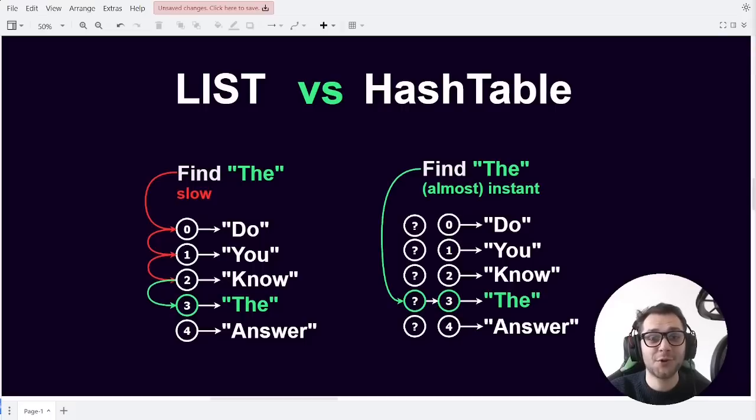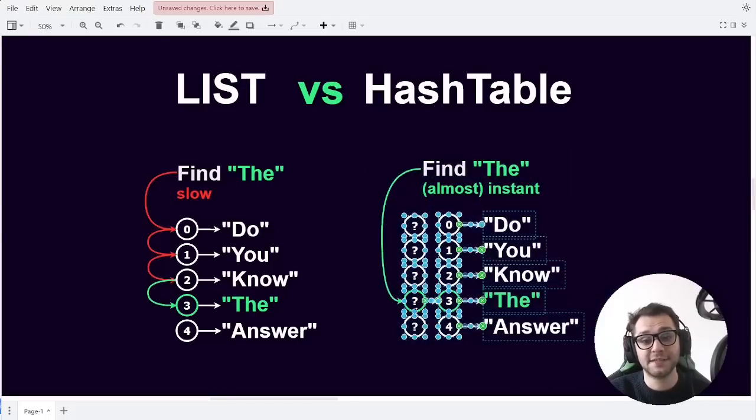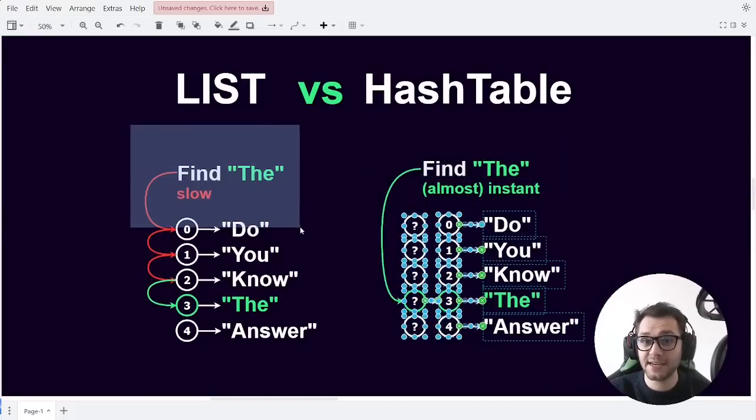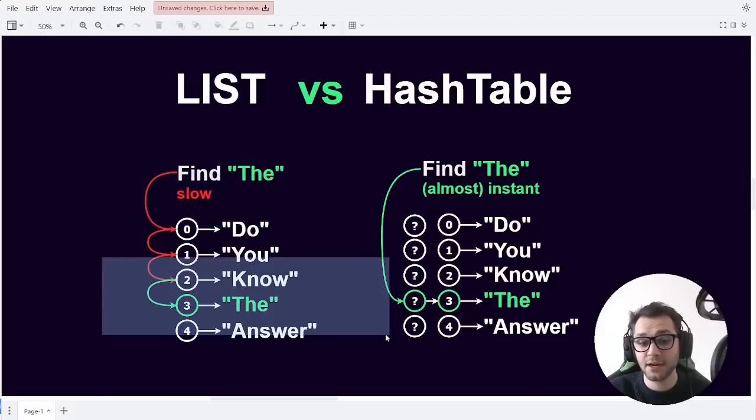Hey everyone and welcome to this video going over how hash tables work and why it is the case that when I want to find an item in a hash table I can find it almost instantly, but when I want to find an item in a list I have to go through each item one by one until I encounter my item.